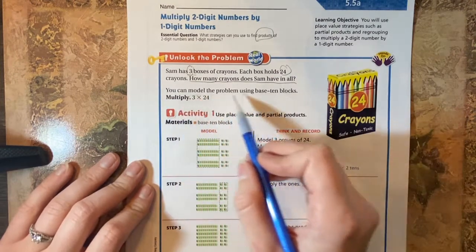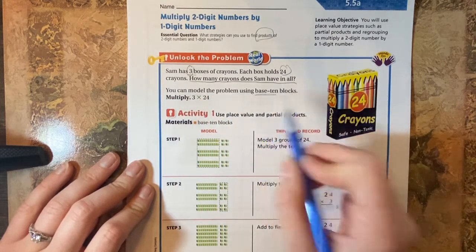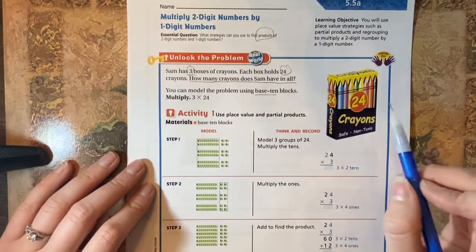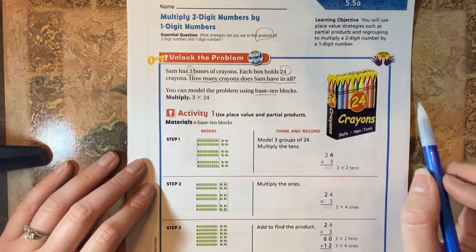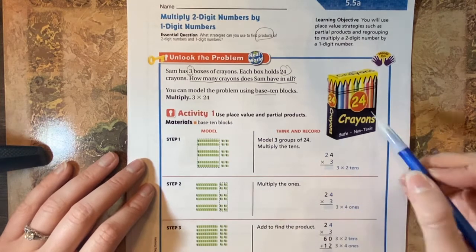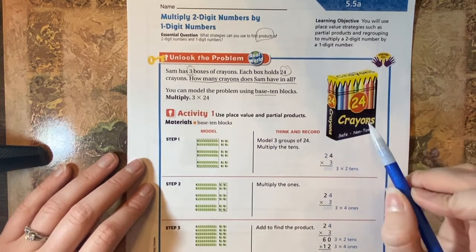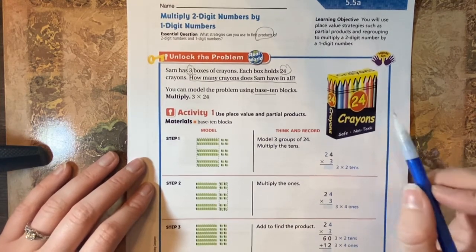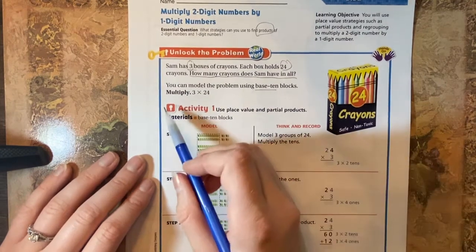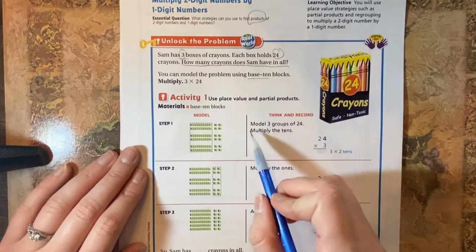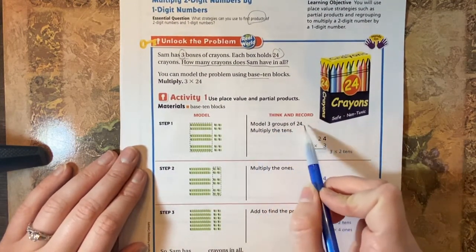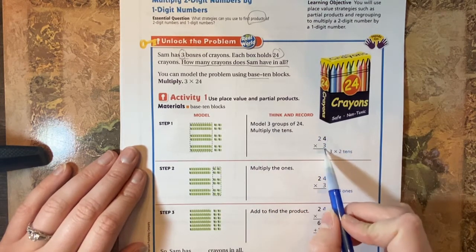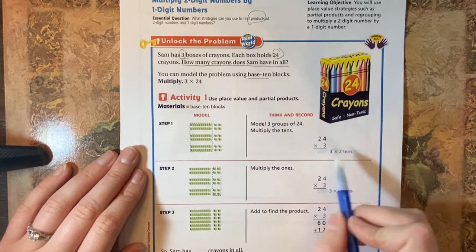So we are going to model the problem using base 10 blocks, which are these right here. Now this is a different strategy for multiplying than we normally do. So I'm going to show you how to do this strategy, then I'm also going to show you a different strategy after we're done with this one. So this one says to model three groups of 24, because we're taking 24 and multiplying it by 3, which means we have 24 three times.